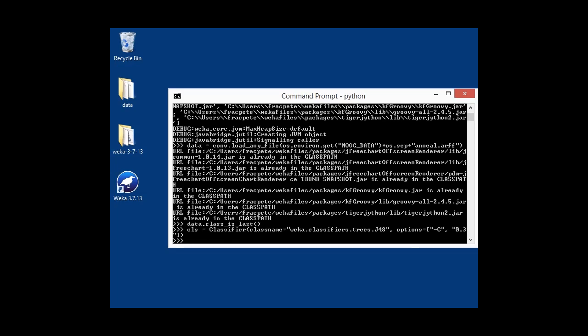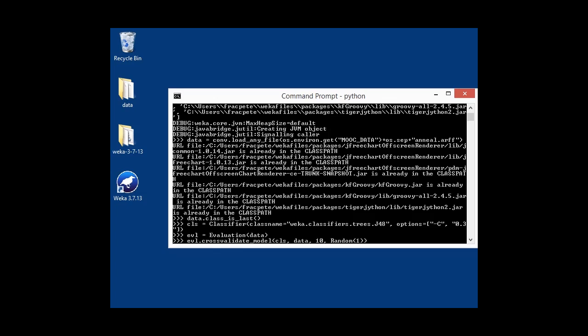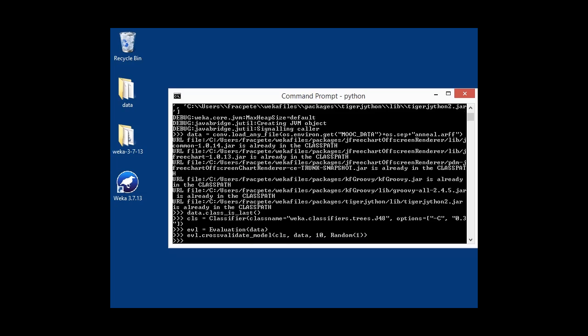Whereas in Jython we simply said, I want to have the J48 class, here we're basically going to instantiate a classifier class and tell that class what Java class to use, which is our J48 classifier, and with what options. So the same confidence factor of 0.3. And once again, same thing for the evaluation class. We instantiate an evaluation object and connect with the training data to determine the priors, and then cross-validate the classifier on the data with tenfold cross-validation. That is done.